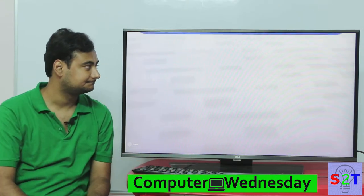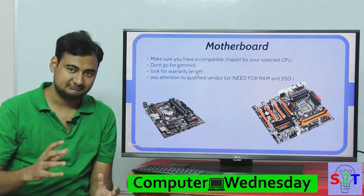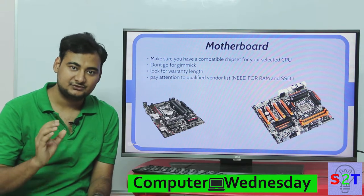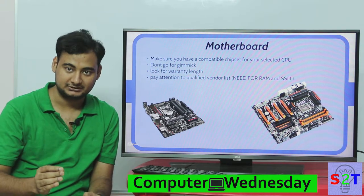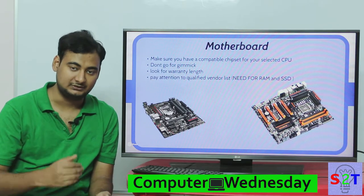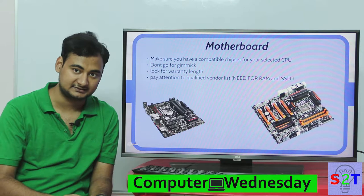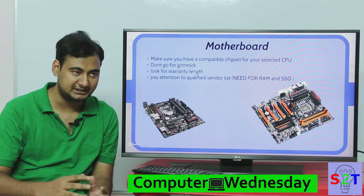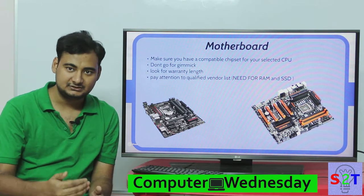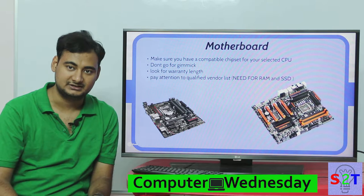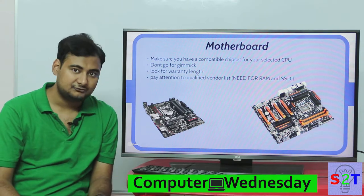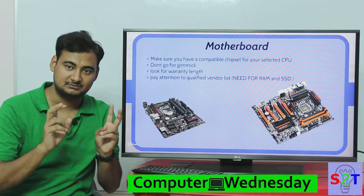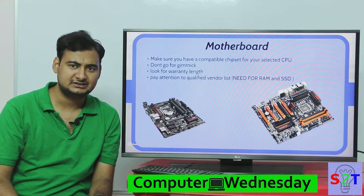Now let's move on to the motherboard. Everything connects to it, so the key thing to understand is that every CPU comes with a supported chipset — you can't mismatch these. Check what chipset your CPU supports, such as X99, X87, or 77. Once you've selected a chipset, avoid gimmicky motherboards with excessive features like overclocking or dual BIOS, as they tend to crash more often.